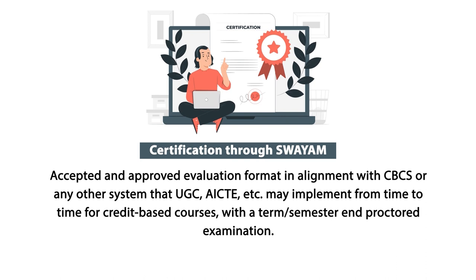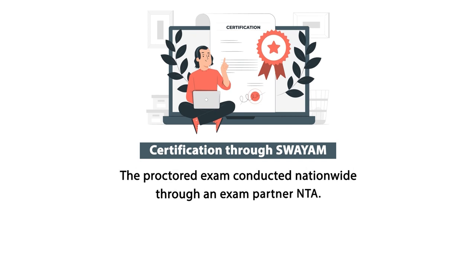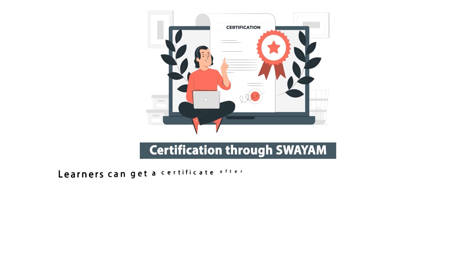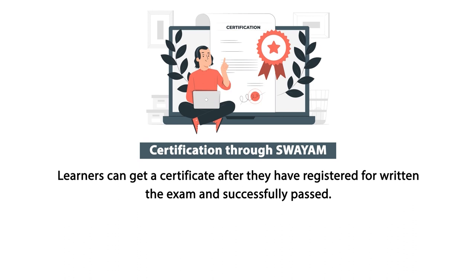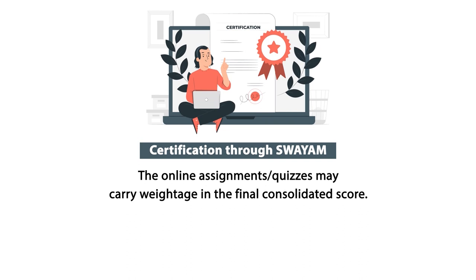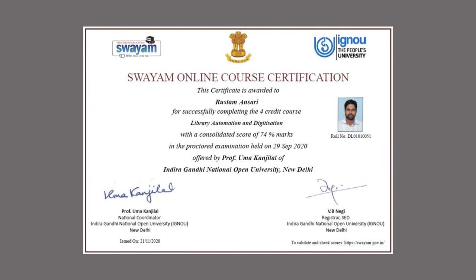The evaluation methodology follows accepted norms prescribed in CBCS or other systems followed by UGC and AICTE. Credit-based courses require the semester term-end examination, which is a proctored examination conducted nationwide through exam partners like NTA. Learners can get a certificate after registering, writing, and successfully clearing the exam. Online assignment quizzes may carry weightage in the final consolidated score. The certificate is validated in the sense that the host institution issues it with the signature of the Controller of Examinations or the Registrar of Examinations.